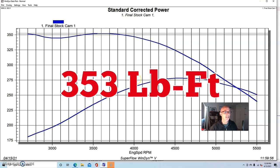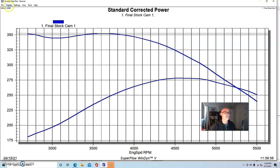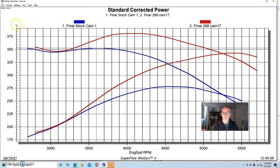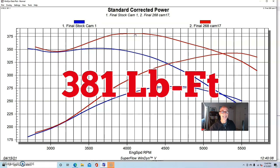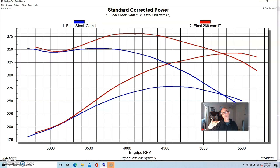Then we installed a Comp Extreme Energy 268 camshaft. That camshaft featured 0.477/0.480 lift split, 224/230 degree duration split, and 110 degree lobe separation. Here's what happened: the power jumped up to 343 horsepower peak, and peak torque was up to 381 foot-pounds. So both the peak horsepower and peak torque improved. More importantly, we didn't lose any low speed power - it was making about the same as the stock cam, which is still a win for a cam upgrade.